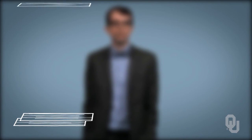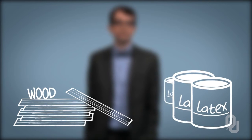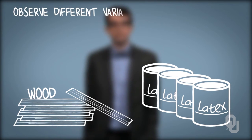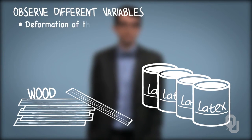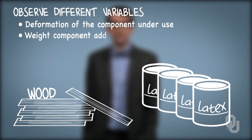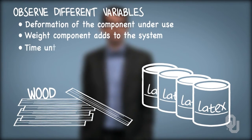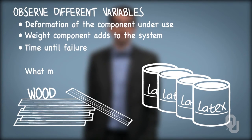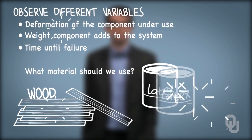In another example, we might be interested in determining what material to use to build a particular component part. We could build that component out of several materials, put them in place in our system, then observe different variables — including the deformation of the component under use, the weight the component adds to the system, and its time until failure, among others. With that collection of quantitative variables, we can draw a conclusion about the qualitative question: what material should we use? As engineers, we should always start with the root question we want to ask, then determine what variables we need to collect to best answer that question.